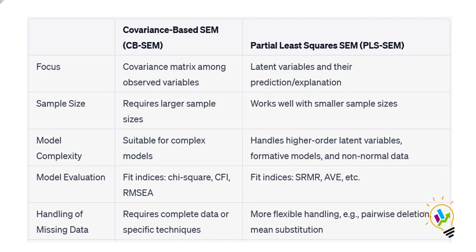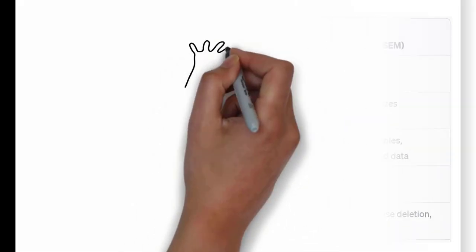These are the major differences between covariance-based SEM and Smart PLS, that is partial least square SEM. Based on the properties of your data and your research requirements, you need to select the appropriate software for your analysis. I hope this video will be helpful for your research. Thank you.